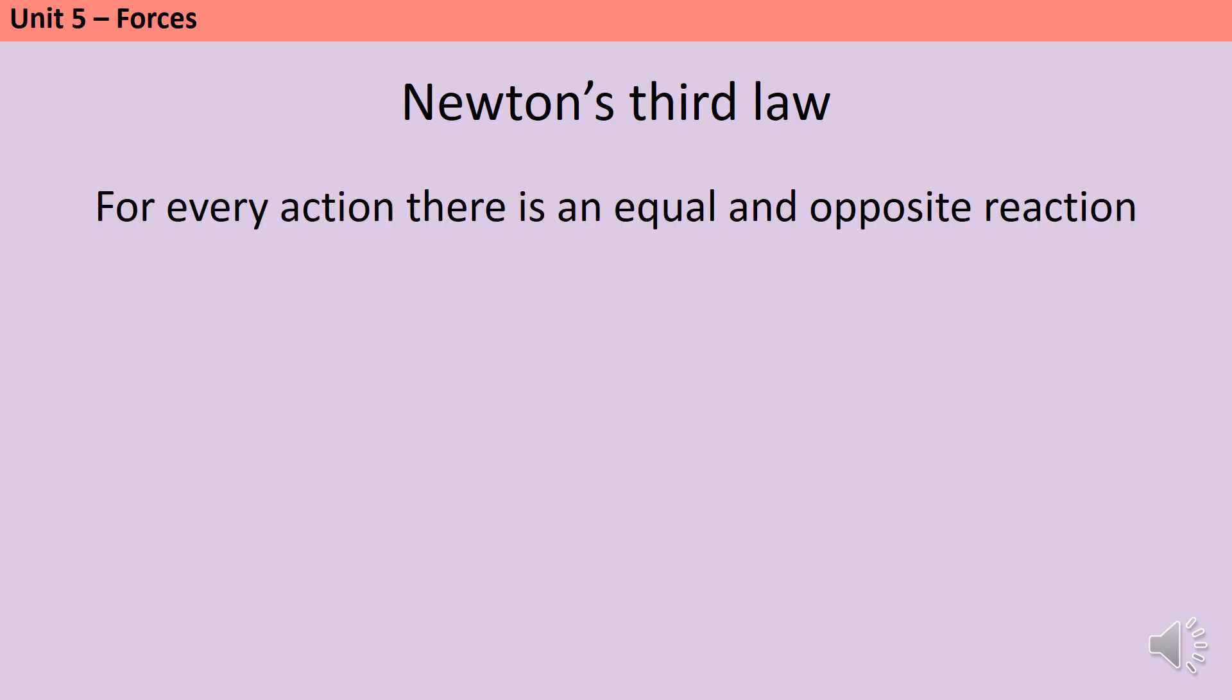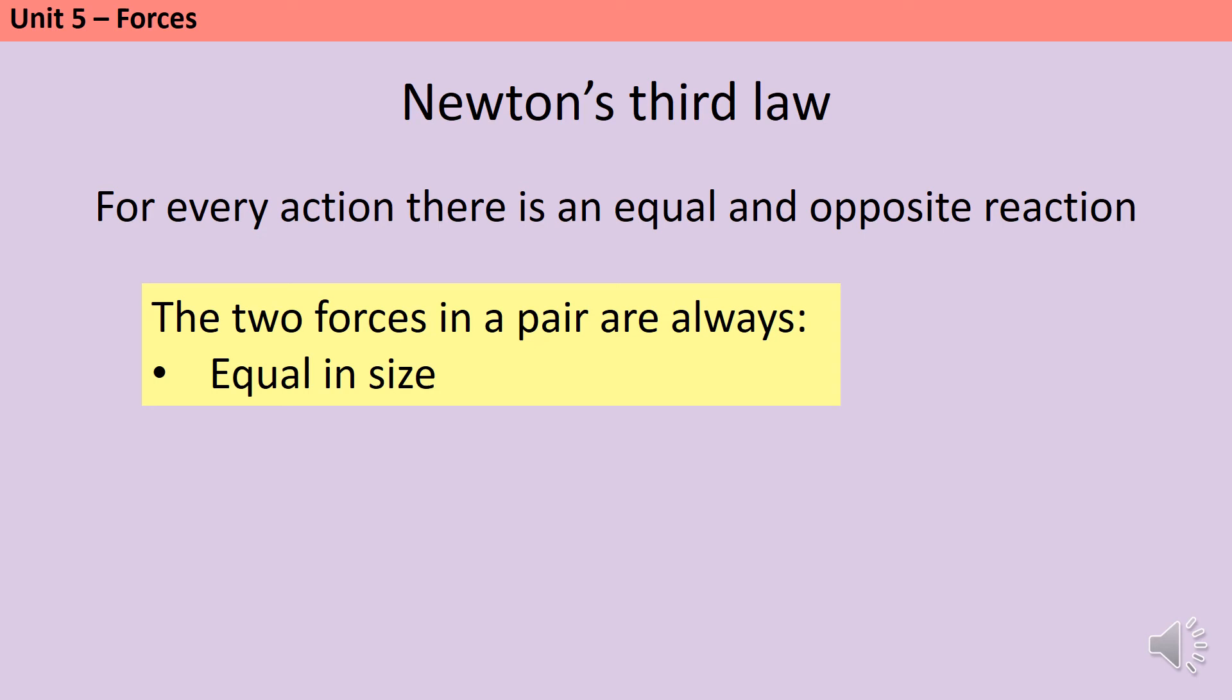This means that forces always come in pairs. And when we look at a pair of forces, we see four things. The first is that the forces are always equal in size. So the book is pushing on the table and the table is pushing back on the book with a force of the same size. If the forces were different sizes, then the book would either fall through the table or it would fly into the air. And obviously neither of those things is happening.